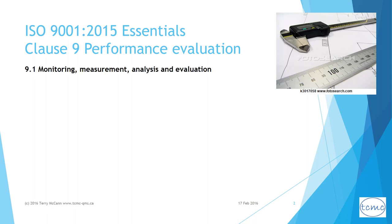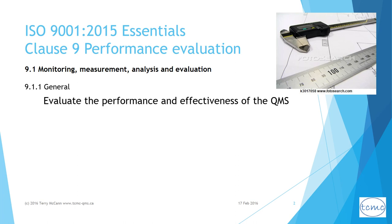Clause 9 of the standard: performance evaluation. 9.1 monitoring, measurement, analysis, and evaluation. This subclause has three segments. The first states that monitoring and measurement needs to be done for the purpose of evaluating the performance and effectiveness of the QMS, and that it is up to the organization to determine what to measure, how, and when.